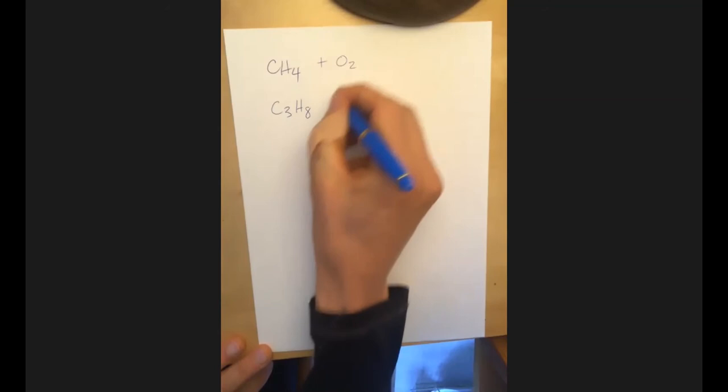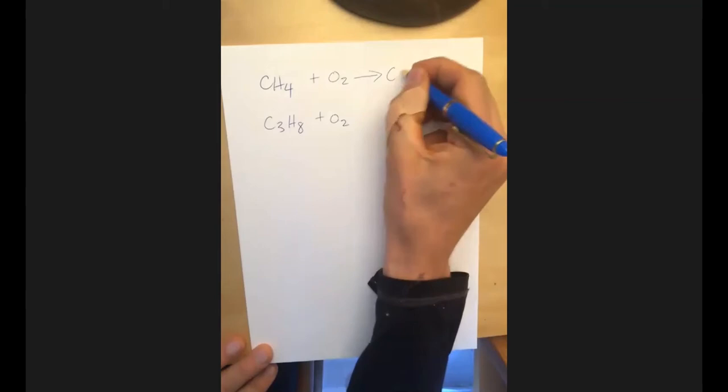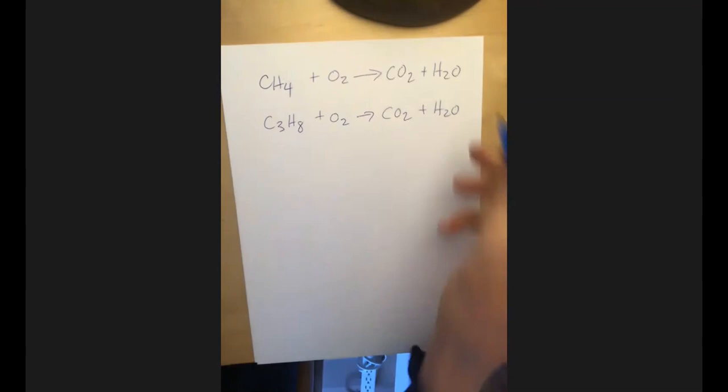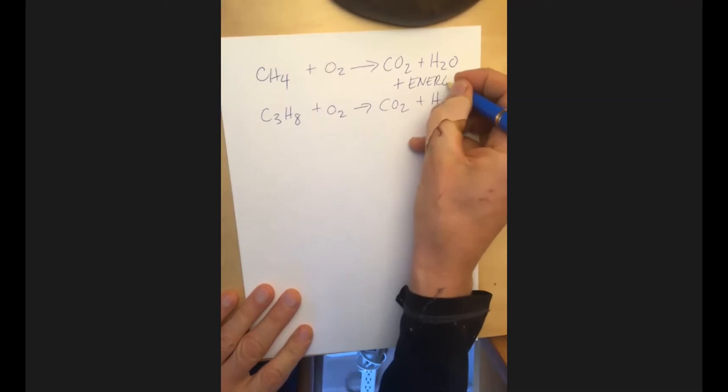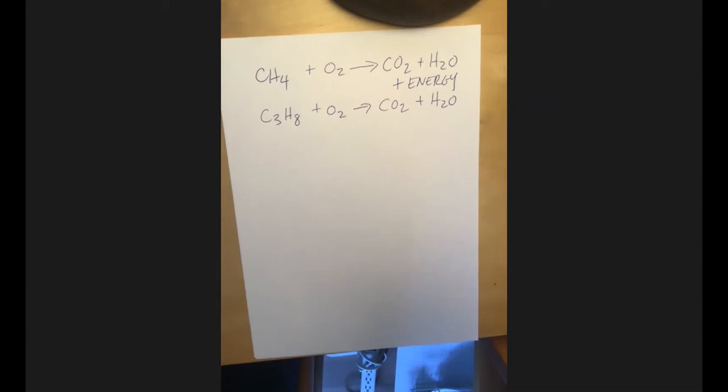One thing we know is that if you take a compound like methane, propane, octane, or some other hydrocarbon and react it with oxygen, the products are carbon dioxide and water. And another piece is that in each one of these cases, these reactions release tons of energy.